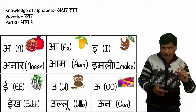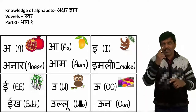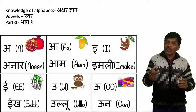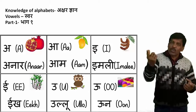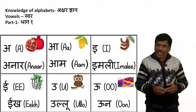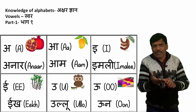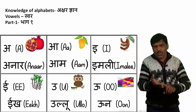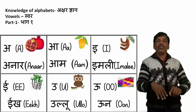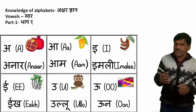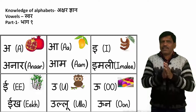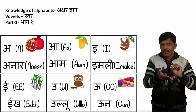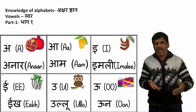The small U and the bigger UU. See the expression — when we utter U, a little early; UU takes a little more time. So: A — anaar, AA — aam, I — imli, II — eek, U — ullu, UU — oon. Friends, this is actually how Hindi starts when we read and write.